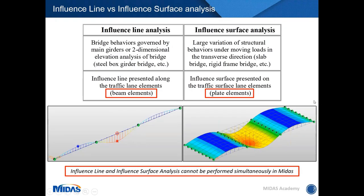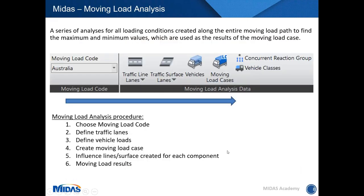Along similar lines, you can build an influence surface, which is similar to influence lines but on a surface, giving both longitudinal and transverse distribution. Influence surfaces are mainly used for plate-type elements, while influence lines are for beam elements. Note that in Midas you cannot use influence line and influence surface analysis together in one model.